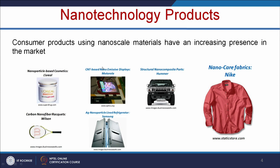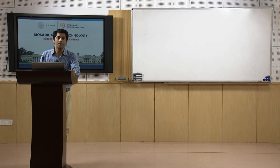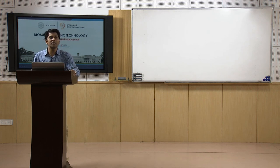Why do we have to study nanotoxicology? These are various consumer products that use nanoscale materials. For example, L'Oreal company is using nanoparticle-based cosmetics, and Motorola is using CNT-based nano emissive displays. We also have nano care fabrics, shirts, and carbon nanofiber rackets. In India, several washing machines are coated with silver nanoparticles, and some soaps also use silver nanoparticles. These silver nanoparticles go into water bodies.